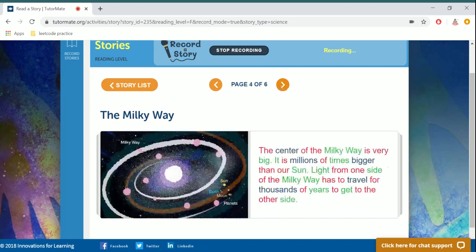The center of the Milky Way is very big. It is millions of times bigger than our sun. Light from one side of the Milky Way has to travel for thousands of years to get to the other side.